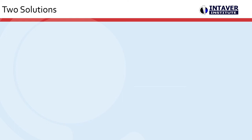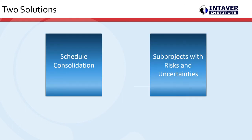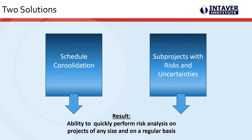Two solutions to this: schedule consolidation and subprojects with risk and uncertainties are two capabilities that distinguish Risky Project from its competitors and can simplify the risk analysis and allow you to quickly perform risk analysis on mega projects.